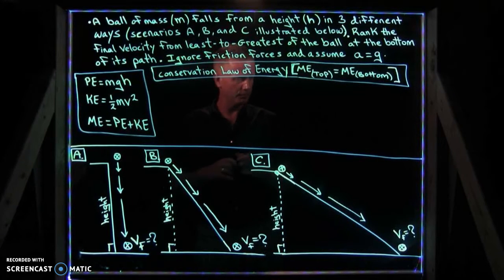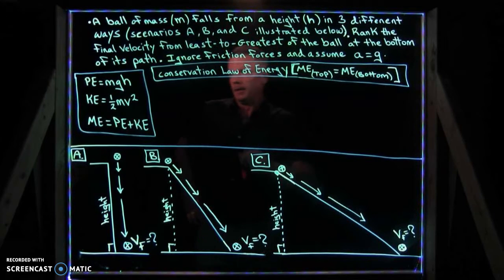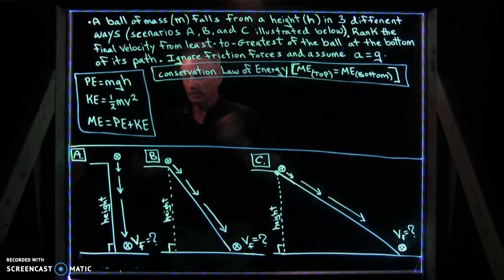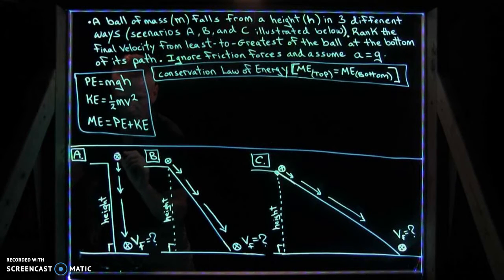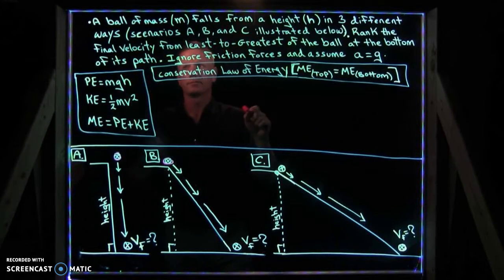So I have a problem, and this is a problem that you will see again. It's illustrated up here at the top. A ball of mass m, here we are, this is our ball of mass m, falls from some height in three different ways.